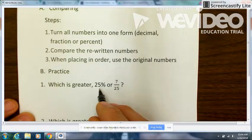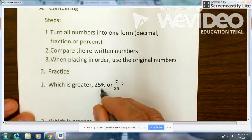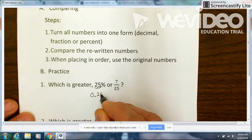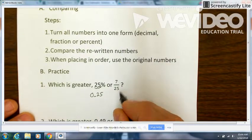You can divide by 100, or if you remember, with a percent just move the decimal point two places to the left. So as a decimal it's 0.25. Next, if we want to change 7/25 into a decimal, we would do a division problem.